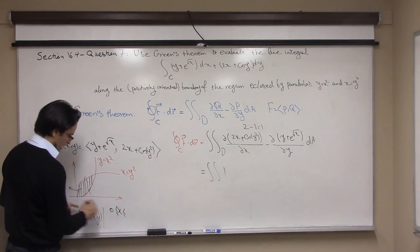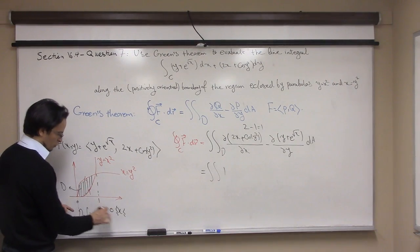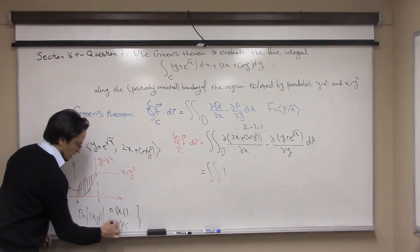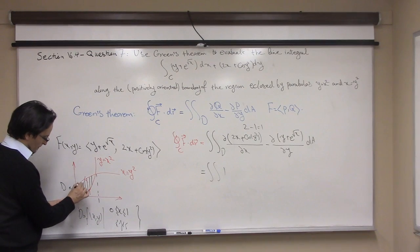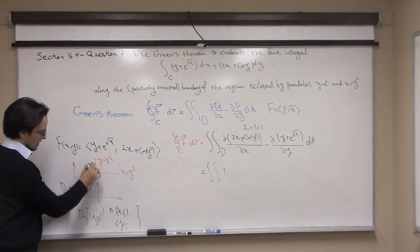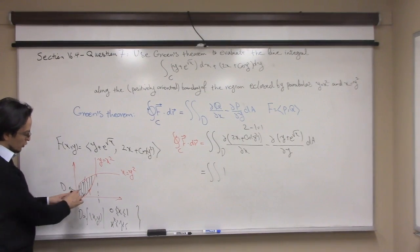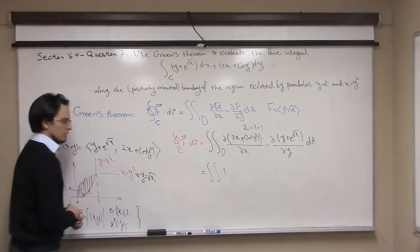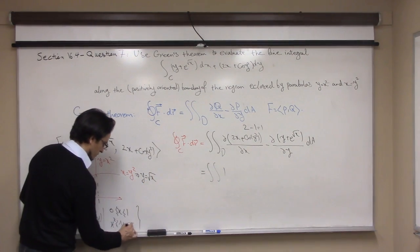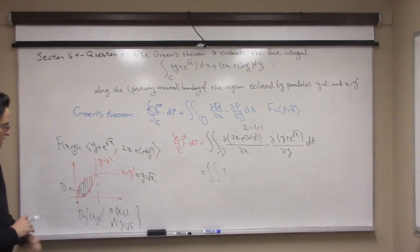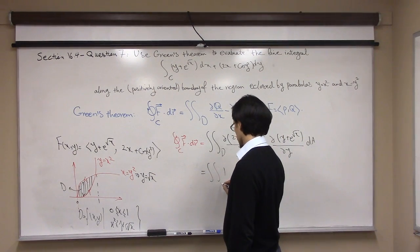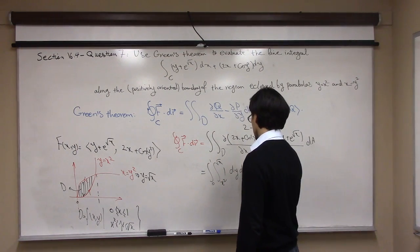In Type 1 form, x goes from 0 to 1, which are the intersection points of the two parabolas. For y, I go from the lower curve x squared up to the upper curve, which is y equals root x when x equals y squared is rewritten in terms of y. So the iterated integral goes from x squared to root x, with x from 0 to 1, dy dx.